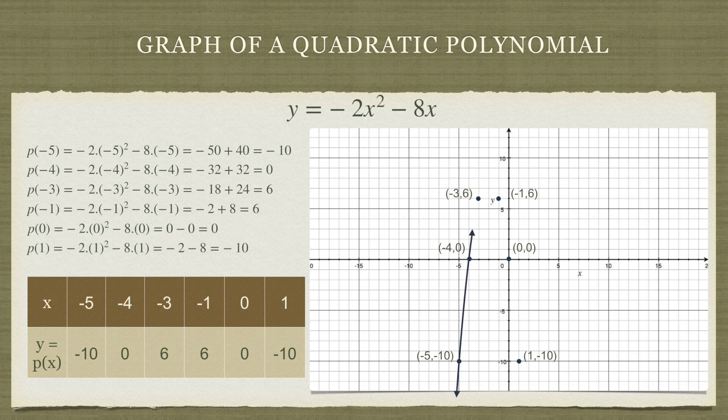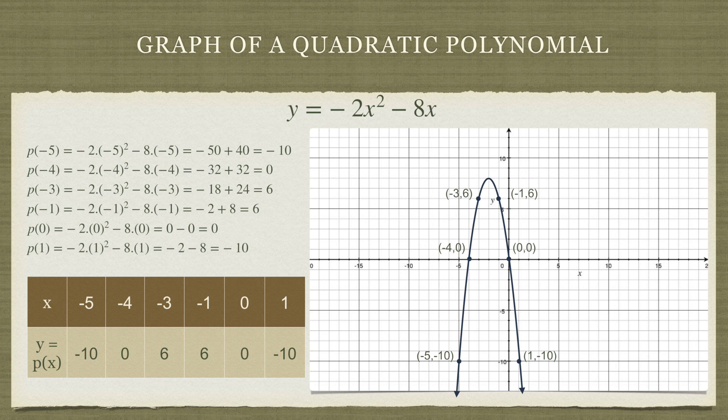And it looks like this. This is a special kind of curve known as a parabola, essentially shaped like a U or a V. In this case, it is upside down, but it could also be facing upwards.